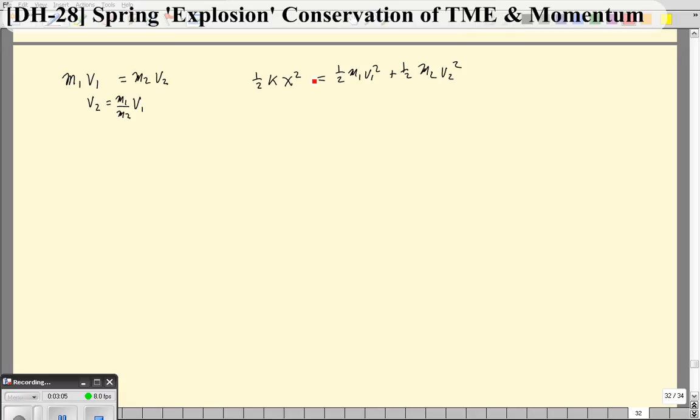We're going to look here at the conservation of energy. There's a half everywhere, so those cancel out. And then what I'm going to do is I'm going to plug this in for V2. So rewriting the first part stays the same. Kx squared equals M1 V1 squared plus M2. Now when I square this, that's going to be M1 squared over M2 squared V1 squared, or M1 squared over M2 squared times V1 squared.